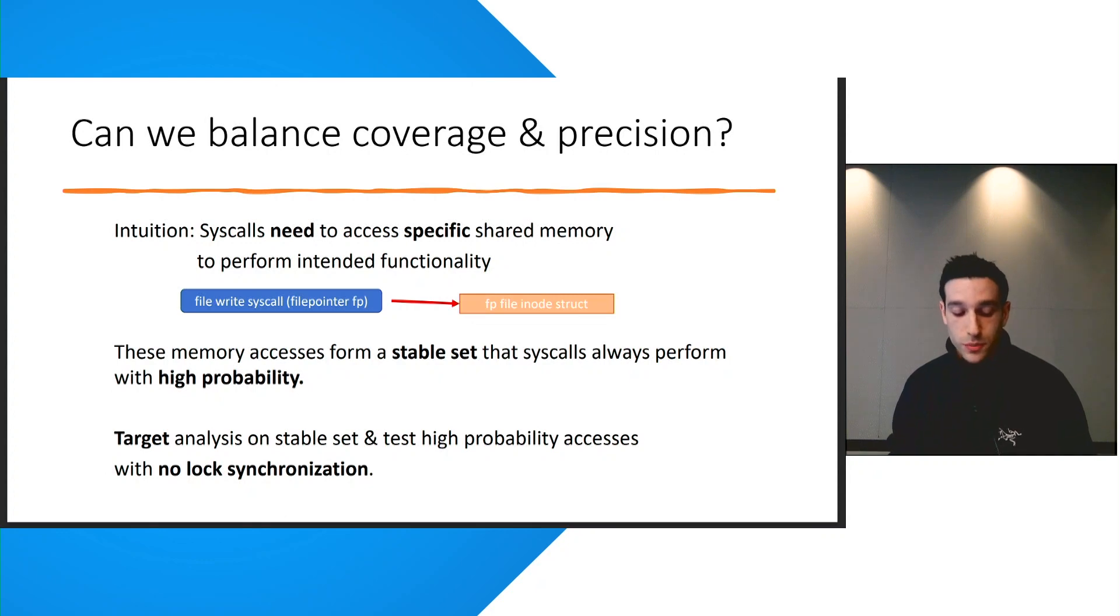So, therefore, in our approach, we try to balance coverage and precision. So instead of considering all possible races, we focus on a specific subclass of races that we can predict precisely. The intuition behind our approach is that system calls need to access specific memory addresses to perform their functionality. So an example of this is a file write system call must access the file inode struct in order to perform a write. And these memory accesses form a stable set that system calls always perform with high probability when they are executed. Therefore, our key idea is to target race prediction analysis on the stable set and test high probability accesses and then perform additional lock set analysis on the stable set to make these predictions even more precise.